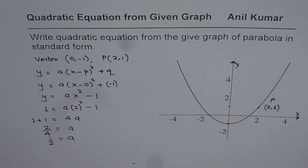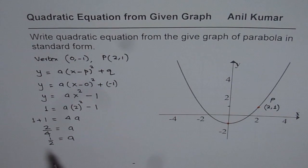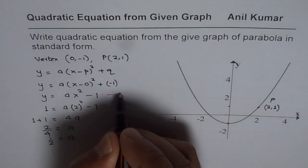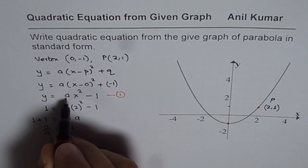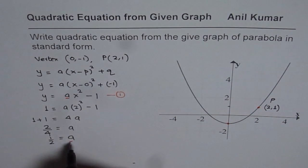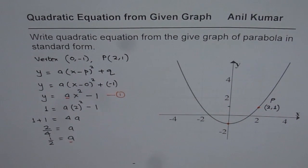Now we've completed the first part of getting the equation of the parabola. Since we know the value of a, we can write down the equation. Let me call this equation 1 and substitute a into this equation to write down the result.